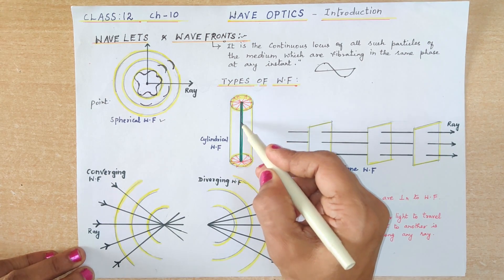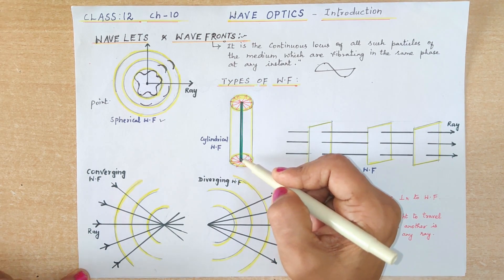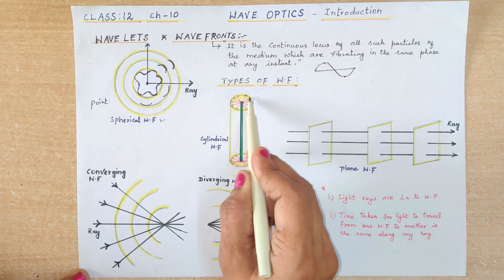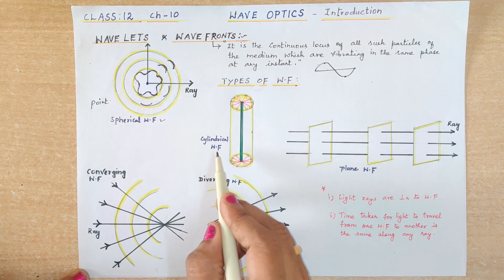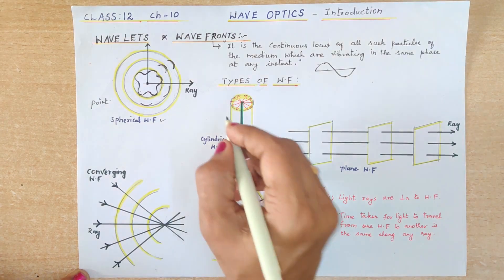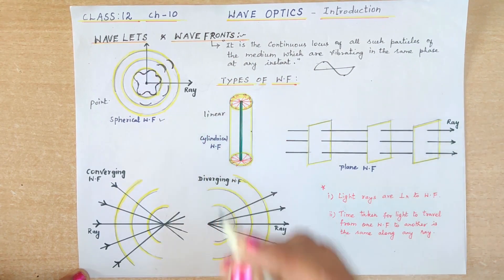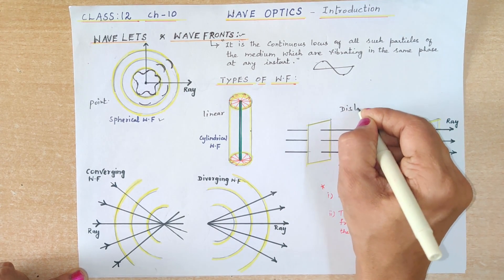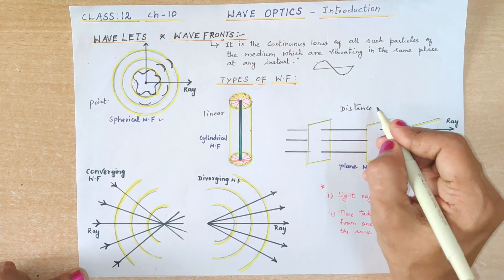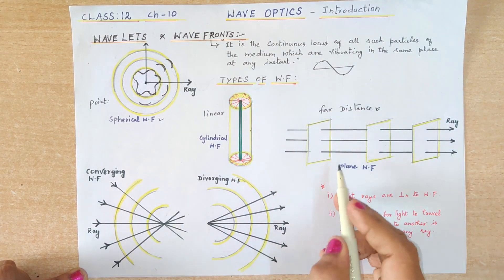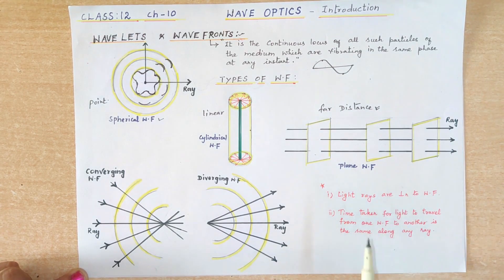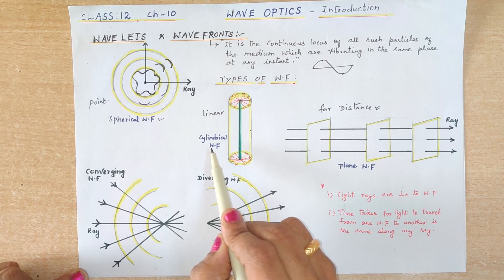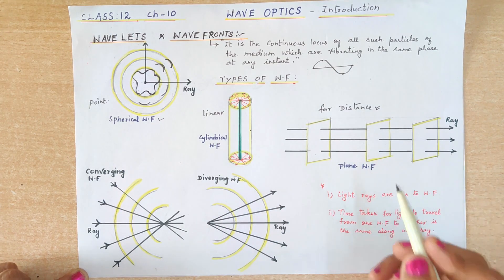In the similar way, for a linear source — a long-shaped source — the light also spreads in all directions, and the wavefront will be cylindrical in shape. You must remember this. And if the light comes from a distant source, far from our eyes, then these are the plane wavefronts that enclose all the wavelets. So, to summarize: for a point source — spherical wavefront; for a linear source — cylindrical wavefront; and for a distant source — plane wavefronts. These are the types of wavefronts.